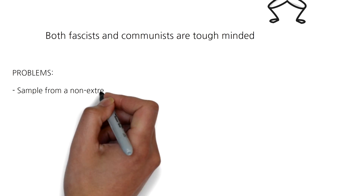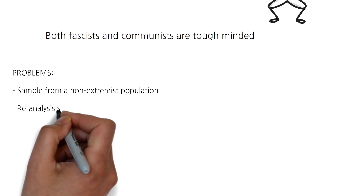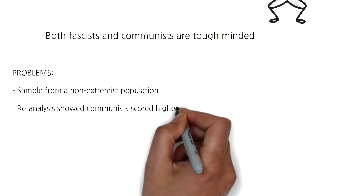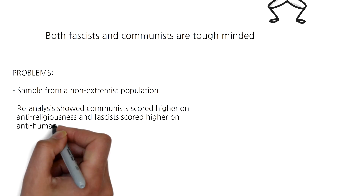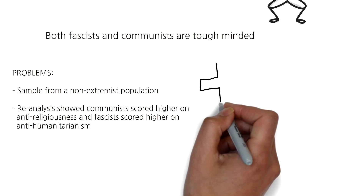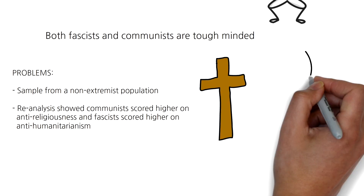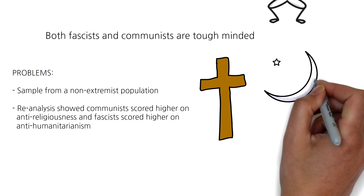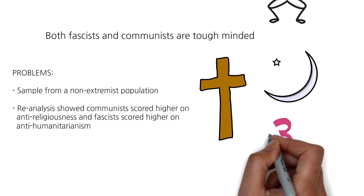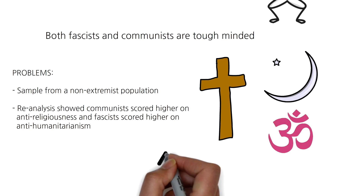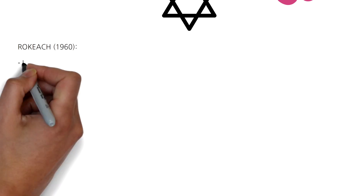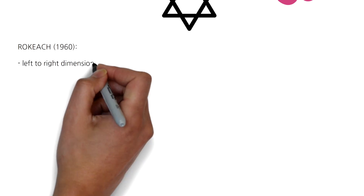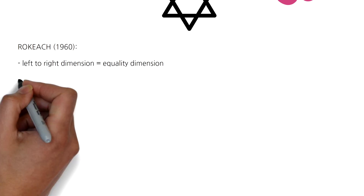Problems with this research include how people are interpreting the tender versus tough-minded dimension. Secondly, respondents were sampled from a non-extremist population. Within a re-analysis, Rokeach and Hanley in 1956 showed that communists scored higher on anti-religiousness items, whereas fascists scored higher on anti-humanitarianism items.